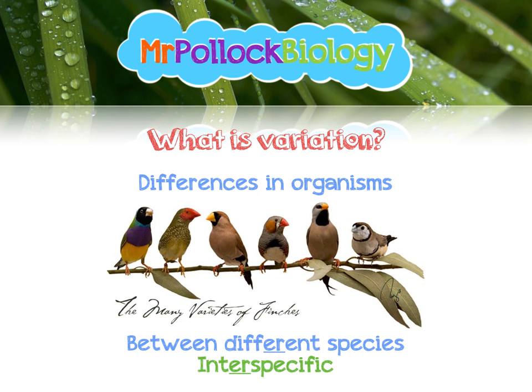Here we've got some finches — different species of finch — and we can see there are loads of differences in the colours of the plumage. In other species of finch there's a lot of variety in beak size, depending on what they feed on, something that Darwin looked into quite a lot. This is inter-specific variation: variation that occurs between different species.